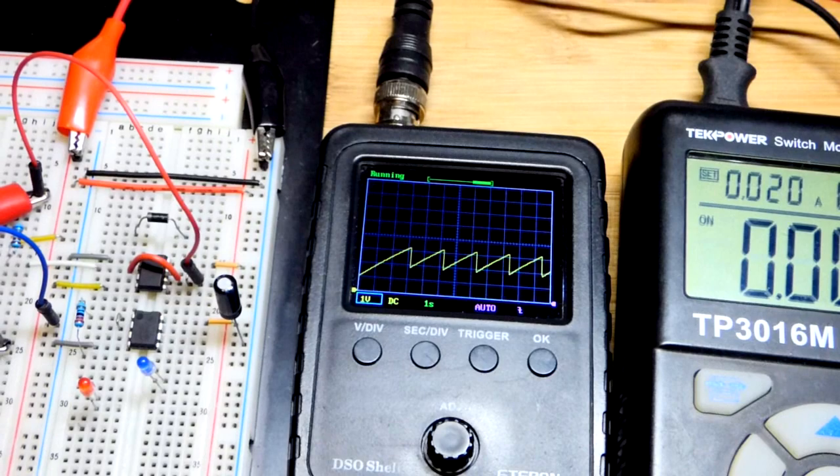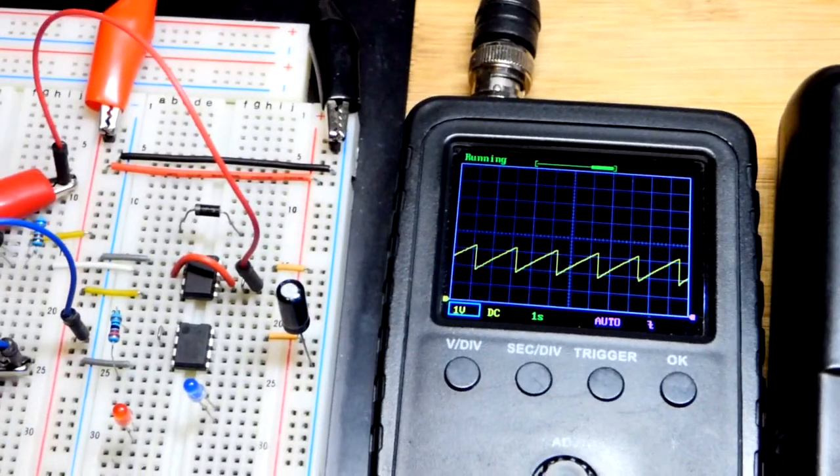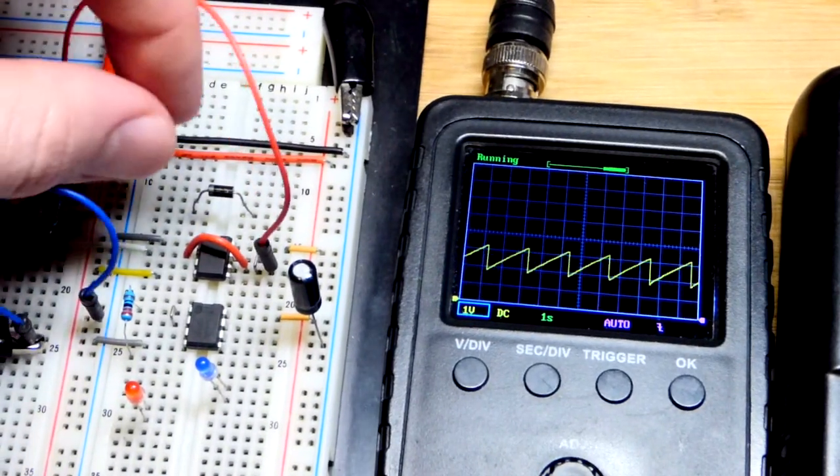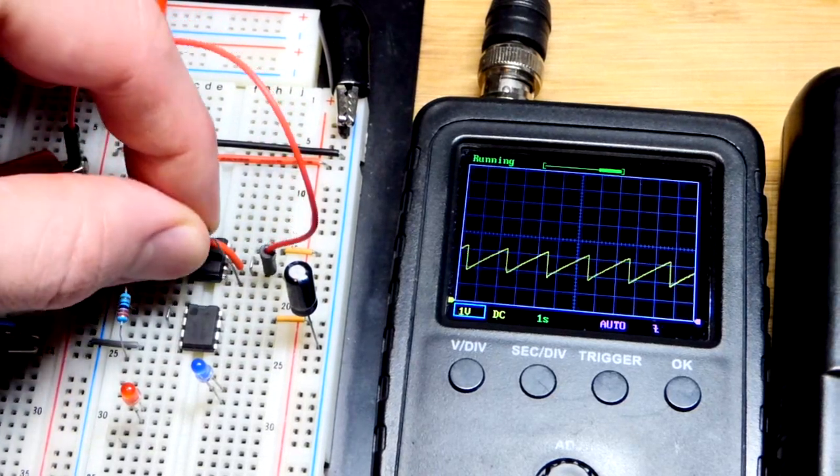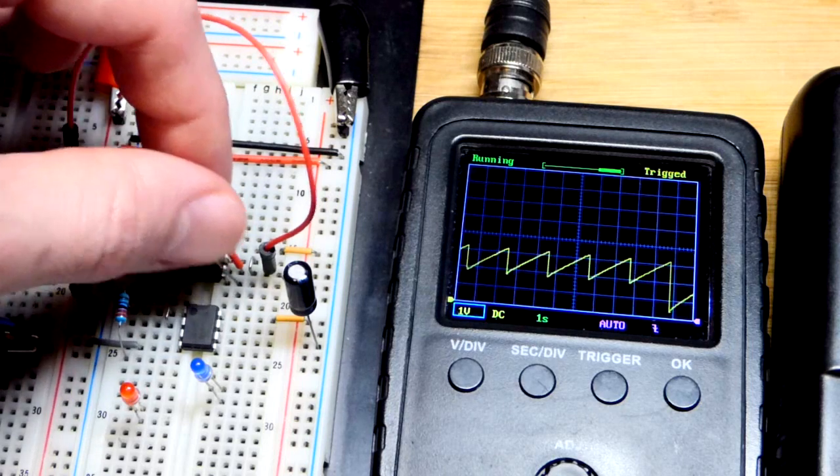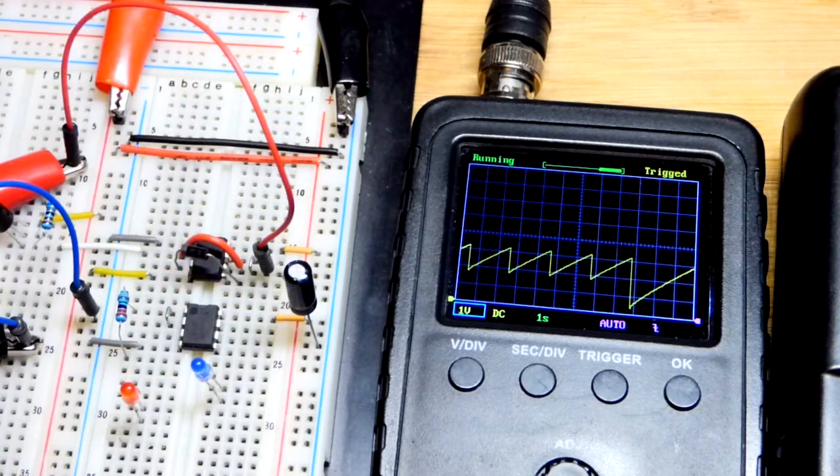You can see the waveform that we explained before pretty nicely. Now we're going to take the diode—cathode, the gray band, to the output and the anode to pin 5, the control pin.